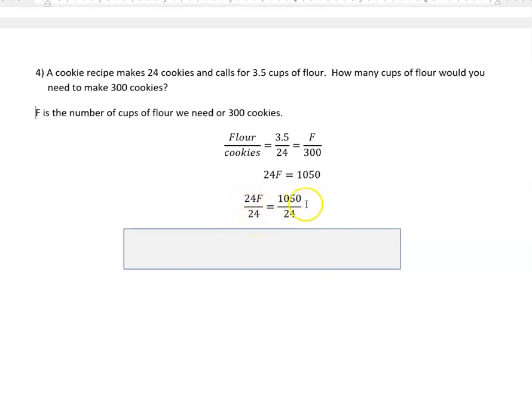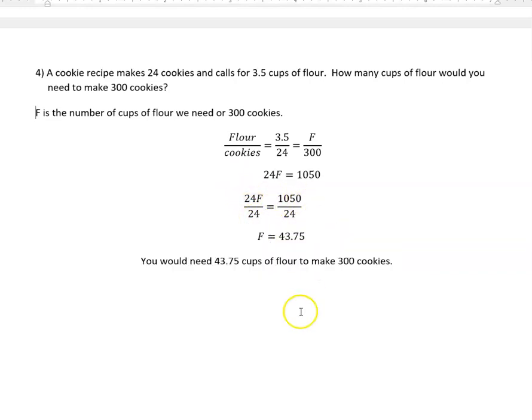If I cancel those out, I just get F, and 1050 divided by 24 is 43.75, so I need 43 and three quarters, or 0.75 cups of flour to make 300 cookies. All right, have a fantastic day and we'll see you next time.